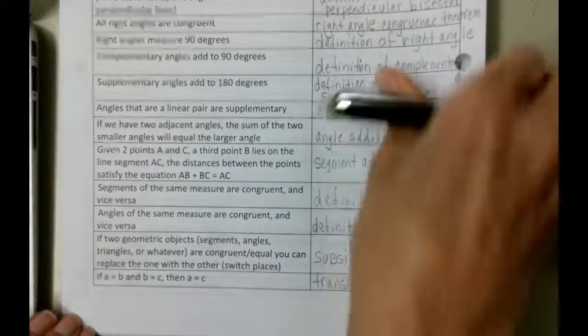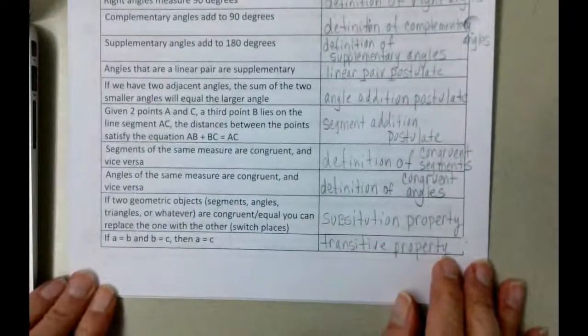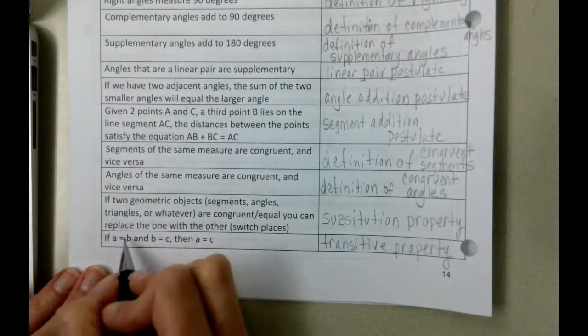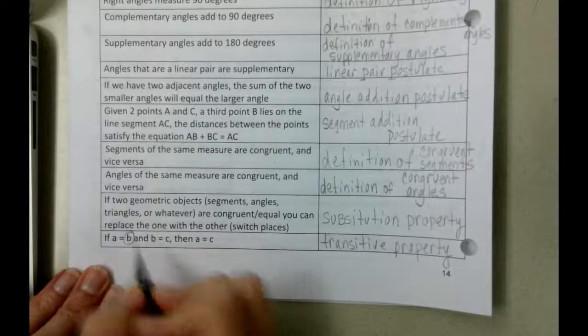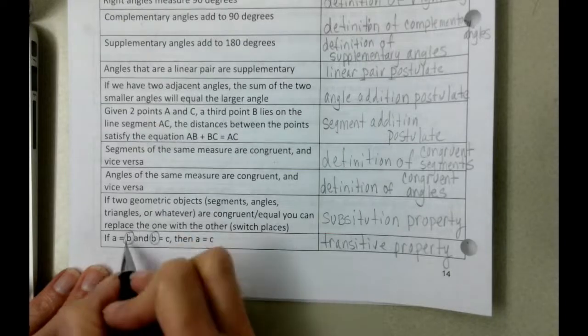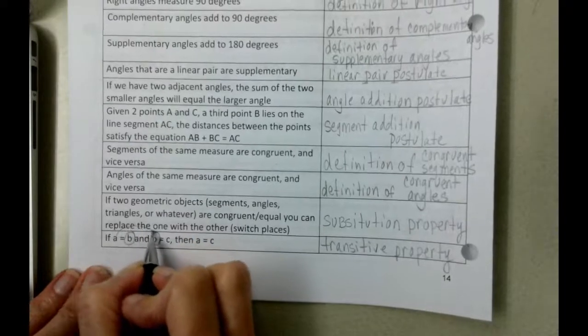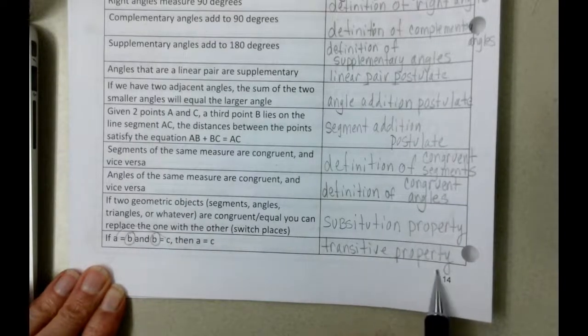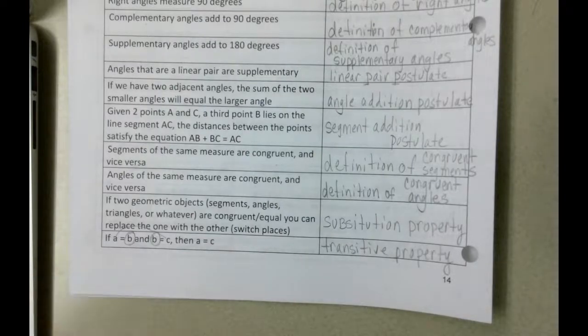And again, other geometry teachers may have a little bit different approach to this, but what I'd like to say is because we have b here and because we have b here, we're going to transport a over to c. And transport kind of sounds like transitive. So that's how, again, a goofy way for Mrs. Danhoff to remember the transitive property. So that is the...